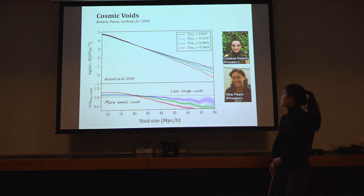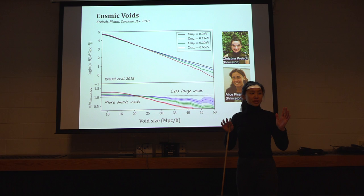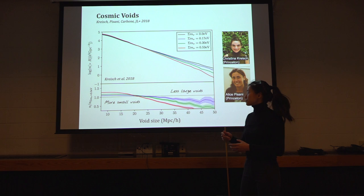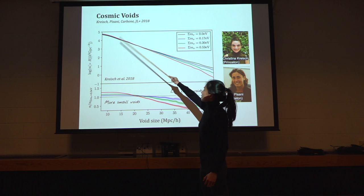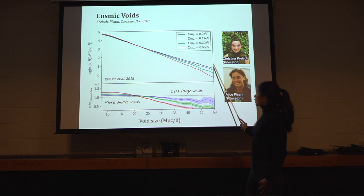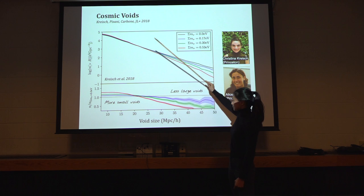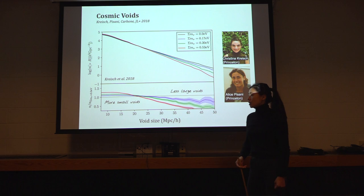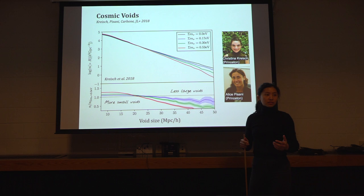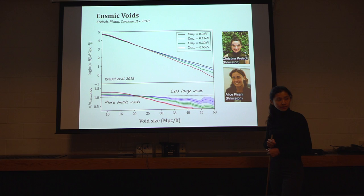So this is the work I collaborated with Christina Krash and Alicia Pissani, both at Princeton. So I want to show you the void size function. So in contrary to the halo mass function, void, there's no real mass of the void, but rather how big they are. That's the equivalent to mass for halos. So this is the void size. And this is number of them, histogram of them. And in our universe, most of voids are pretty small. And then there are a few large voids. If you increase the neutrino mass here, we found that you tilt this distribution. If you look at the ratio plot on the bottom, it is telling you that when you boost the neutrino mass, we see less large voids, but more smaller voids.